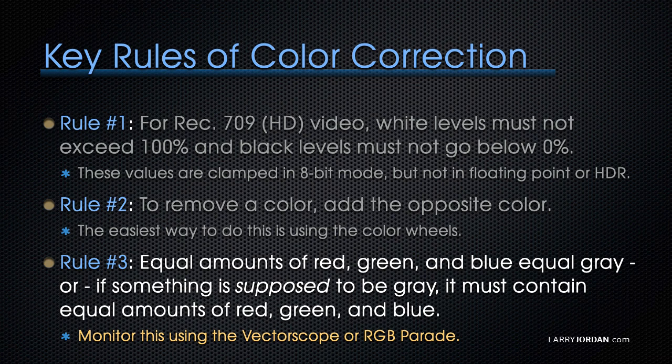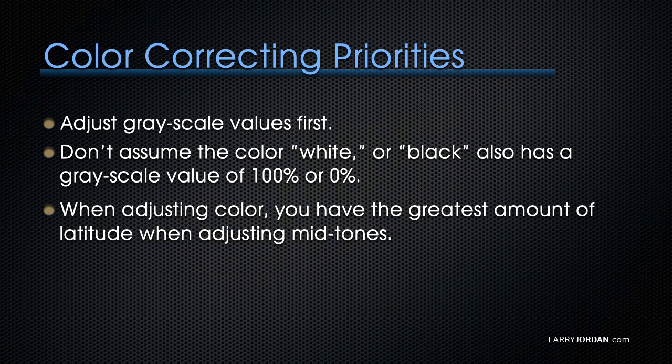We monitor this using the vectorscope, which is my preference, or the RGB parade. If something is supposed to be gray, it must contain equal amounts of red, green, and blue, which means a single dot in the center of the vectorscope. So when we're color correcting, we adjust grayscale values first.